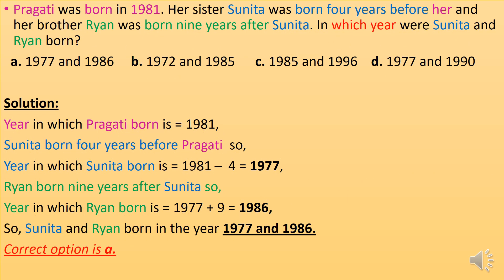Pragati was born in 1981. Her sister Sunita was born 4 years before her, and her brother Rian was born 9 years after Sunita. In which year were Sunita and Rian born? Year Pragati was born is 1981. Sunita was born 4 years before Pragati, so 1981 minus 4 equals 1977. Rian was born 9 years after Sunita, so 1977 plus 9 equals 1986. Sunita and Rian were born in 1977 and 1986. So the correct option is A.